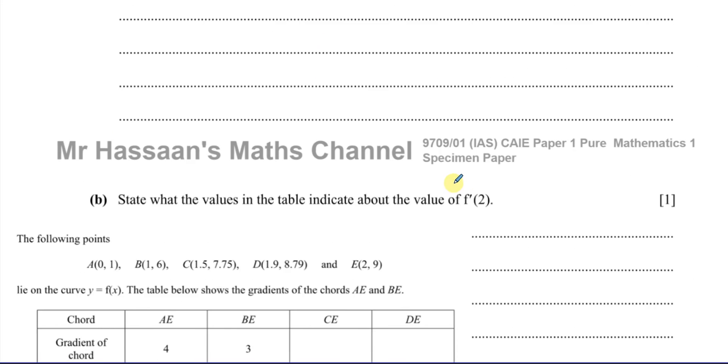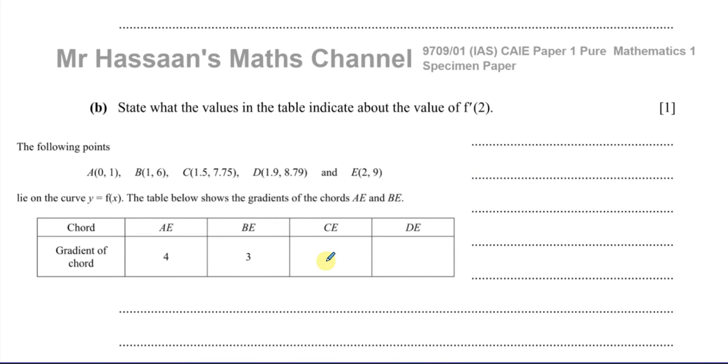Now for part B, it says, state what the values in the table, which were 2.5 and 2.1 as we found, state what the values in the table indicate about the value of f'(2). What does f'(2) mean? Now this is going on to another topic, which is to do with differentiation. So you have f(x) and you have f'(x). This is like f(x) you could say is Y and f'(x), another way of writing this is dy/dx. This means the gradient function. This is the derivative, the gradient function.